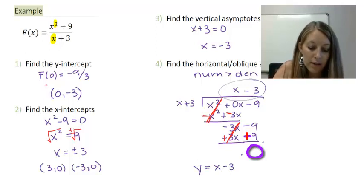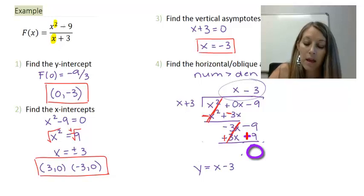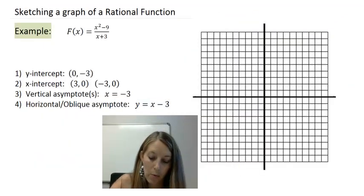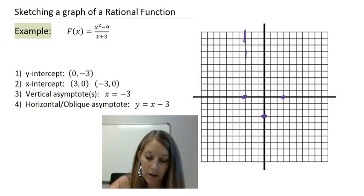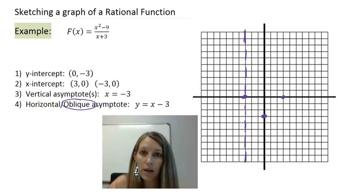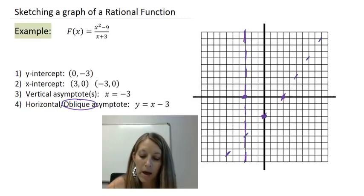Now let's plot all of this information on the graph. My y-intercept is (0, -3). My x-intercepts are (3, 0) and (-3, 0). There's a vertical asymptote at x = -3. And my oblique asymptote is y = x - 3. Remember, you graph that just like any line — a y-intercept of -3 and a slope of 1, going up 1 over 1. So there is my oblique asymptote plotted.